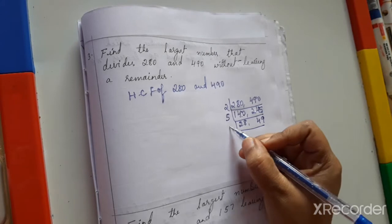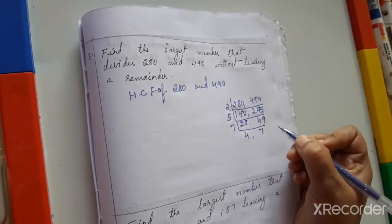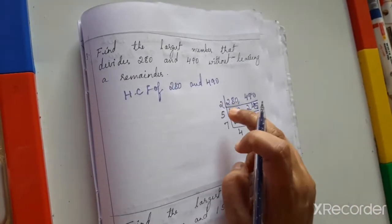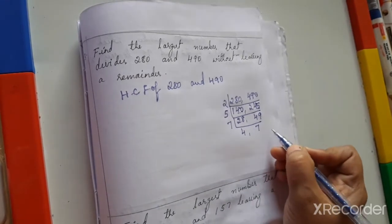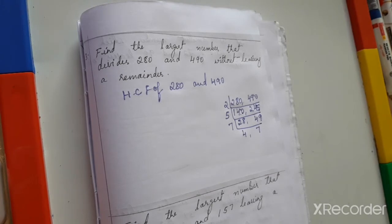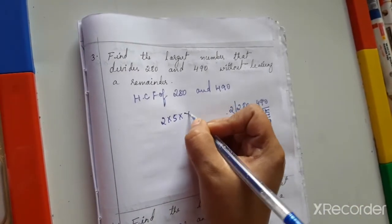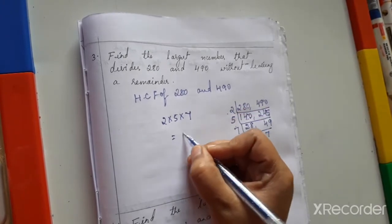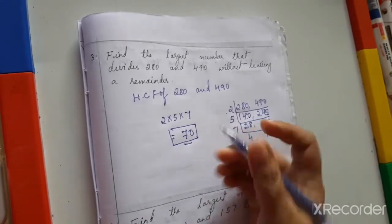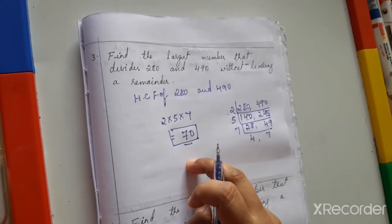Now try 7: 28 ÷ 7 = 4, 49 ÷ 7 = 7. Since 4 and 7 don't share a common factor, we stop. So HCF = 2 × 5 × 7 = 70. The answer is 70. Greatest number means find HCF; with a remainder, subtract it first.